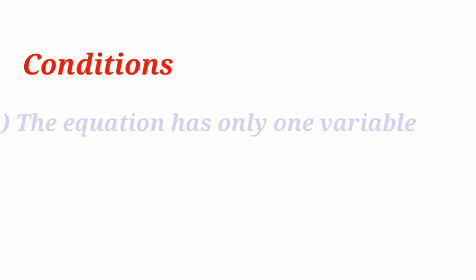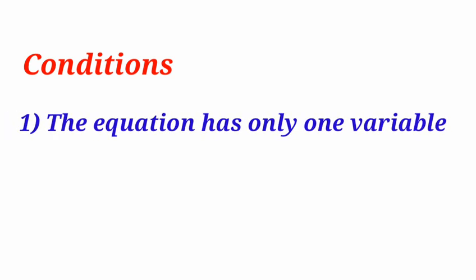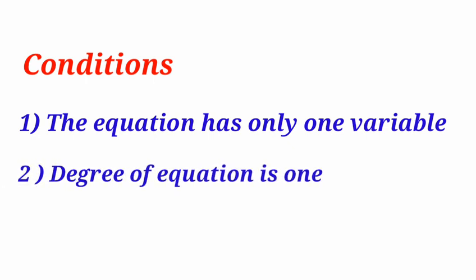The conditions in linear equation in one variable are: the equation has only one variable. Second one, the degree of equation is equal to 1.